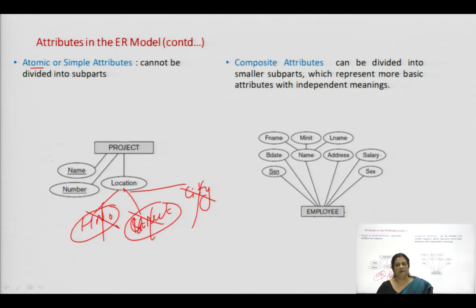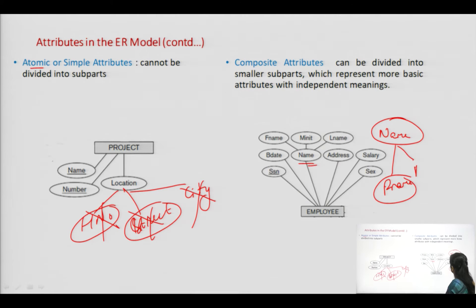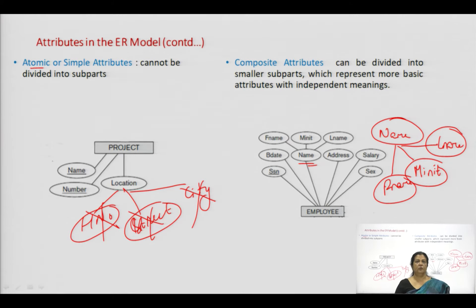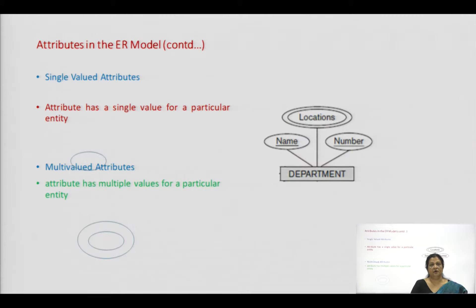A composite attribute is one which can be divided into sub-parts. For example, we have 'name' as an attribute and we have divided it into fname, minit, and lname. Our database system requires that for the name of any person or employee, we store the first name, the initial, and the last name separately. So we have divided the attribute 'name' into three different sub-parts, and such an attribute is called a composite attribute.